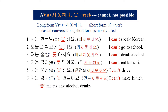1. 저는 한국말을 못해요. — I can't speak Korean. 2. 오늘은 학교에 못 가요. — I can't go to school today. 3. 저는 술을 못 마셔요. — I can't drink alcohol. 4. 저는 김치를 못 먹어요. — I can't eat kimchi. 5. 저는 운전 못해요. — I can't drive.